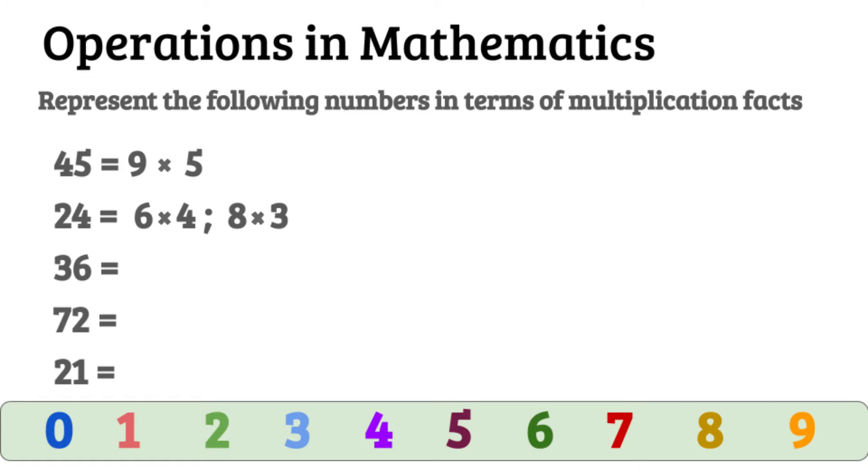For the revision, another set of worksheets is: Represent the following numbers in terms of multiplication facts. You have to provide them with the product, and they have to represent that product in terms of multiplication facts. That is, 45 is 9 times 5.